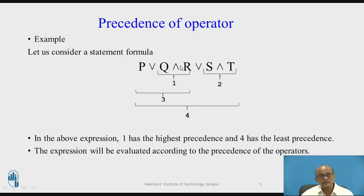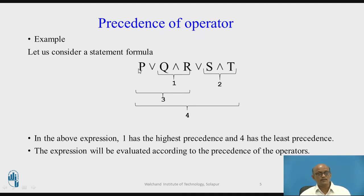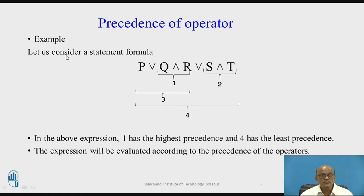Again, OR appears twice in the formula. We resolve this the same way — traversing from the left-hand side, whichever OR comes first will be evaluated first. So the priority for this formula is: Q AND R first, S AND T second, then P OR the result of T1, and finally the result of the entire OR will be evaluated.